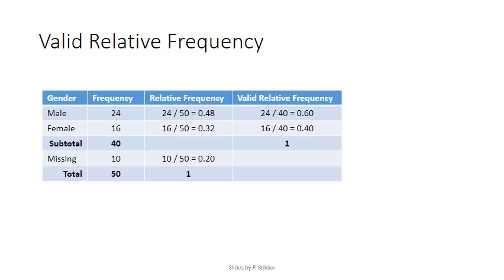So here's an example. The regular relative frequency is calculated by using the grand total, including the new 10 missing values. So for example, we use in the relative frequencies the 50 all the time and divide the frequency. So 24 is this 24 divided by the total of 50, and that gives you 0.48.